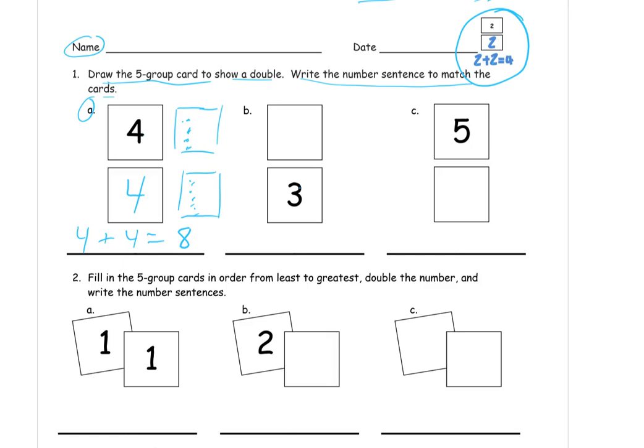So for B, we've got the 3. So we need another 3. And then we just have the doubles number sentence. 3 plus 3 is 6. And we have a 5. So we need another 5. 5 plus 5. Hold 5 fingers on your left hand, 5 fingers on your right hand. 10 fingers.